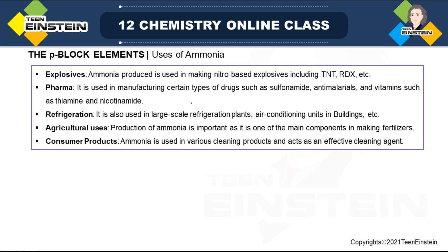Ammonia has versatile uses. It can be used as an explosive, and mainly it is used in making nitro-based explosives. For example, trinitrotoluene (TNT), RDX, etc. — the nitro group is present in these nitro-based explosives. In the pharmaceutical industry, it is used in manufacturing certain types of drugs such as sulfonamides, anti-malarials, and vitamins such as thiamine and nicotinamide.